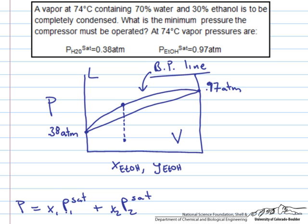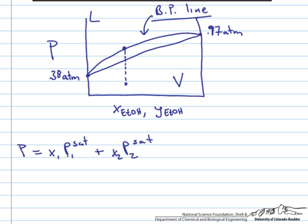So in this case we'll call component one ethanol. So we'll say we have 30% ethanol times the saturation pressure of ethanol which is 0.97 plus x2 which is water so 0.7 times the saturation pressure of water which is 0.38. And if we do this math out this turns out to be 0.56 atmospheres.